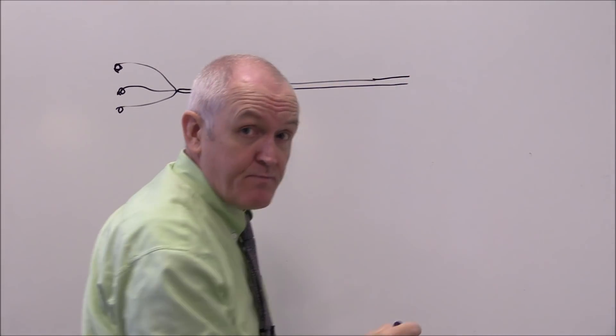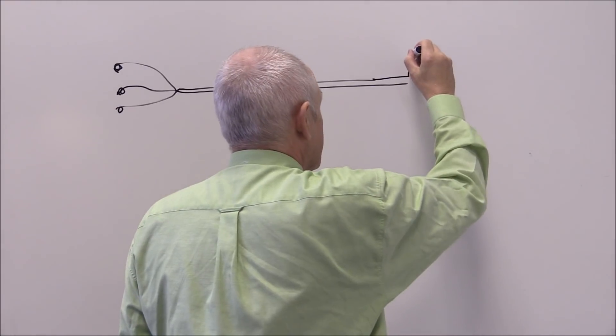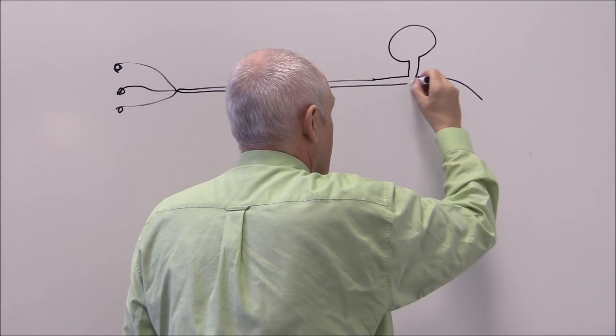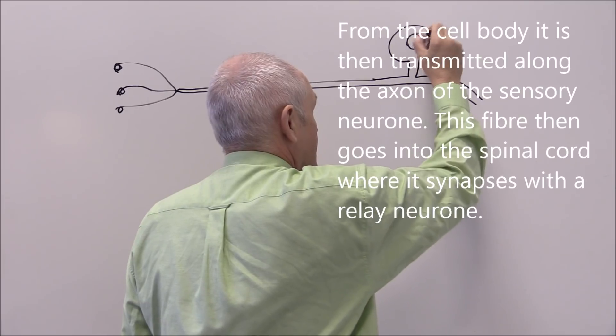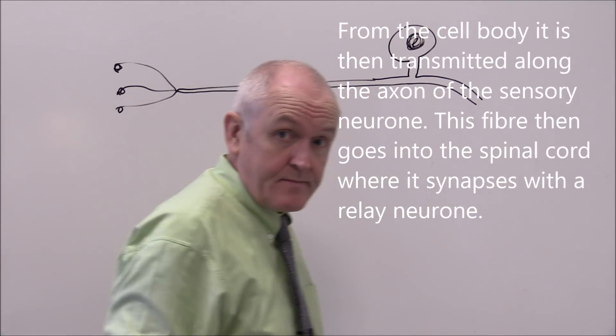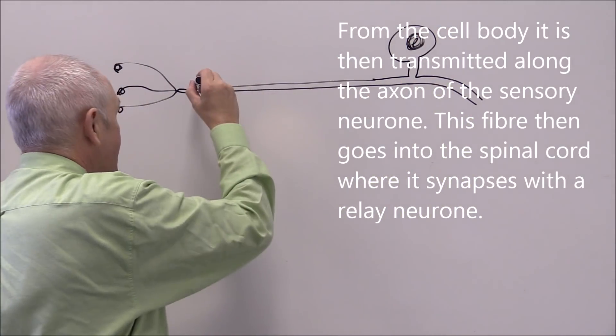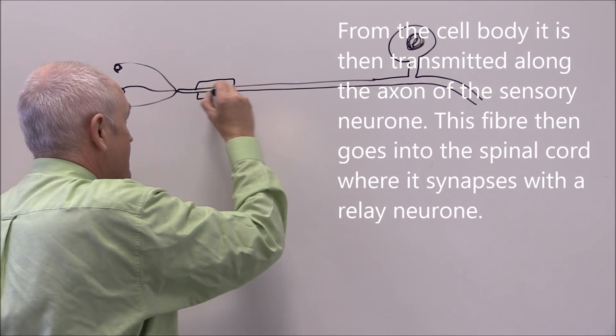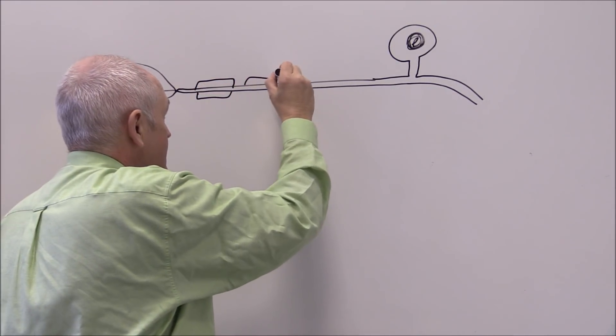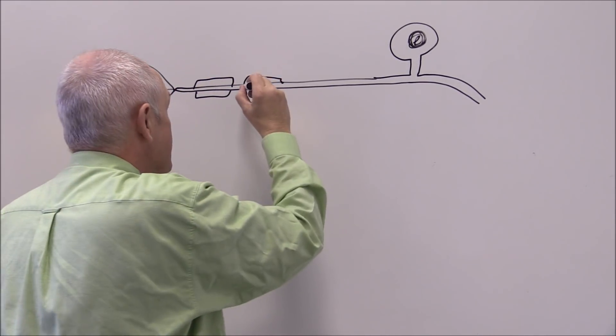As it approaches the spinal cord there's going to be a little side branch with the nerve cell body, and this is going to be myelinated with the Schwann cells that comprise the myelin sheath.